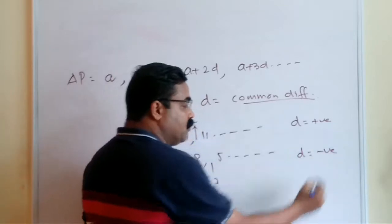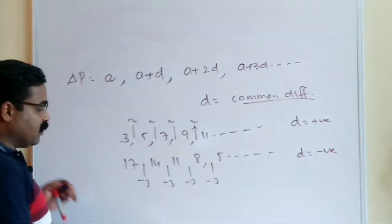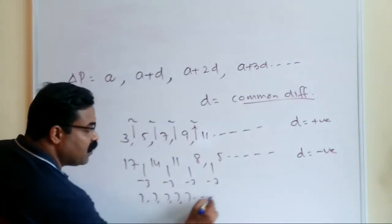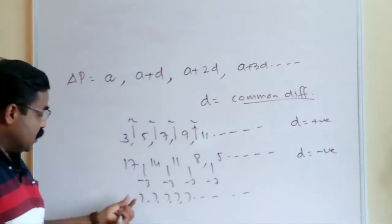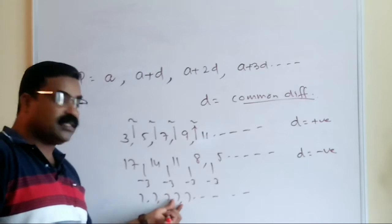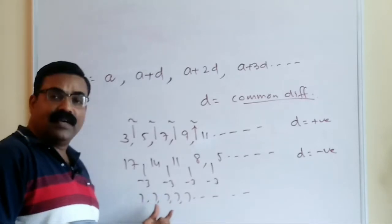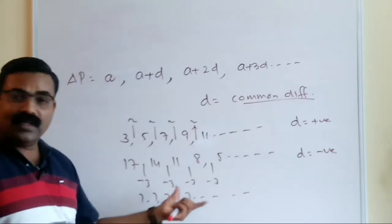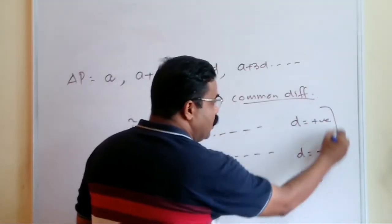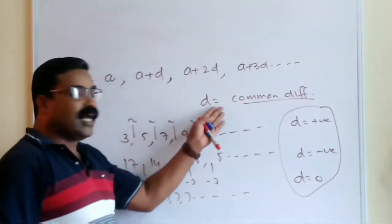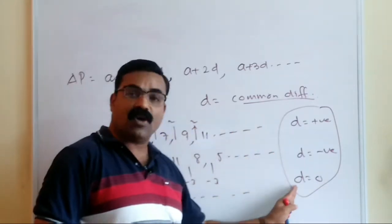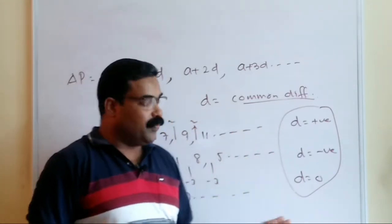If I write a sequence like 7, 7, 7, 7, 7 — here 7 plus 0 gives 7 each time, so d equals 0. To summarize: the common difference can be positive, negative, or zero.